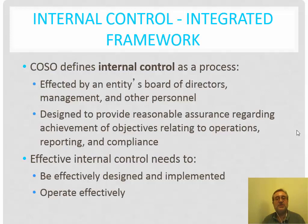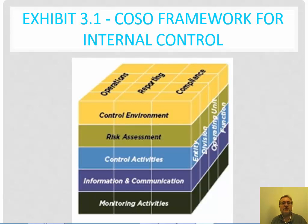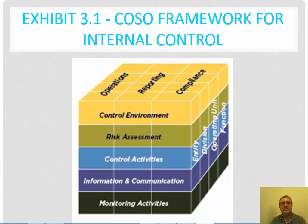In the COSO framework for internal controls, you notice we have a cube that provides the framework for how we consider internal controls. On the top, internal controls are divided into operations, reporting, and compliance. On the side, there is a top-down approach looking at entity, division, operational units, and functions. On the front are the five specific elements of internal controls: the control environment, risk assessment, control activities, information and communication, and monitoring activities. These five components form the basis of the COSO framework.